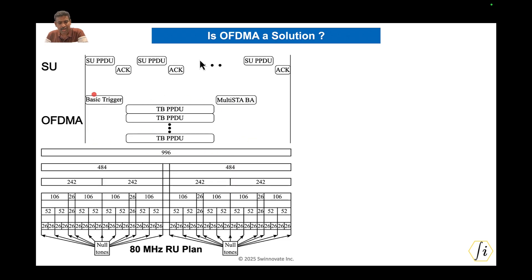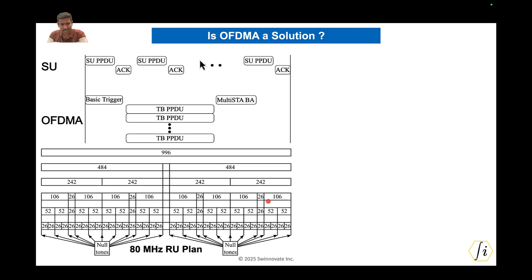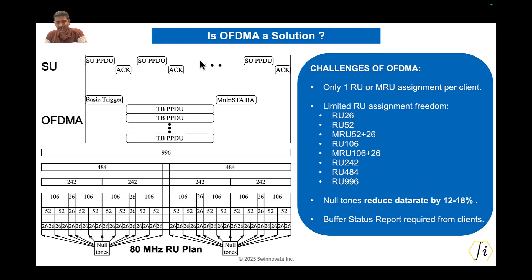However, there are challenges. Here is the RU plan for 80 MHz as described in the Wi-Fi 6 standard. There are several design aspects of OFDMA in the standard that are not ideal. The first is the constraint that one client can be assigned only one resource unit or one multiple-RU unit. The word 'multiple RU' gives the impression you can assign multiple RUs to a client, but that is not actually correct — you can assign only one MRU or RU per client.